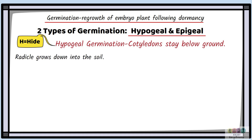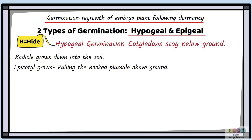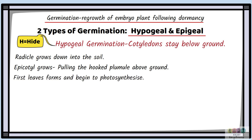In hypogeal germination, the radicle grows down into the soil. After this, the epicotyl grows and pulls the hooked plumule above the ground. The first leaves form and begin to photosynthesise, but the cotyledons stay below the ground.